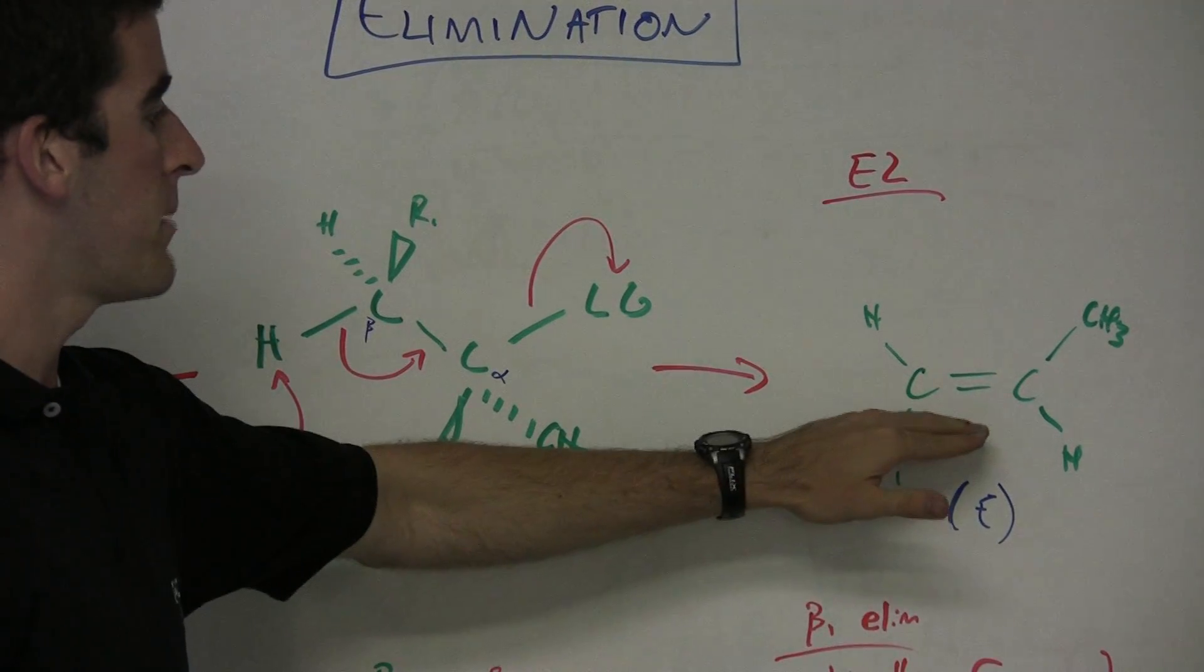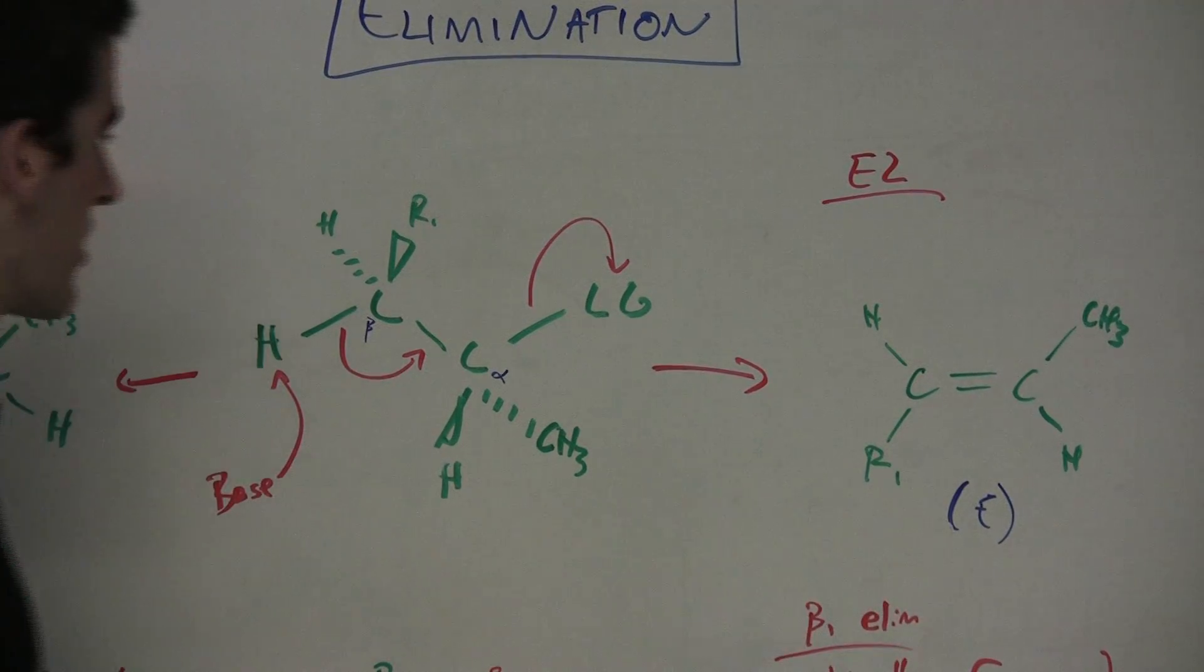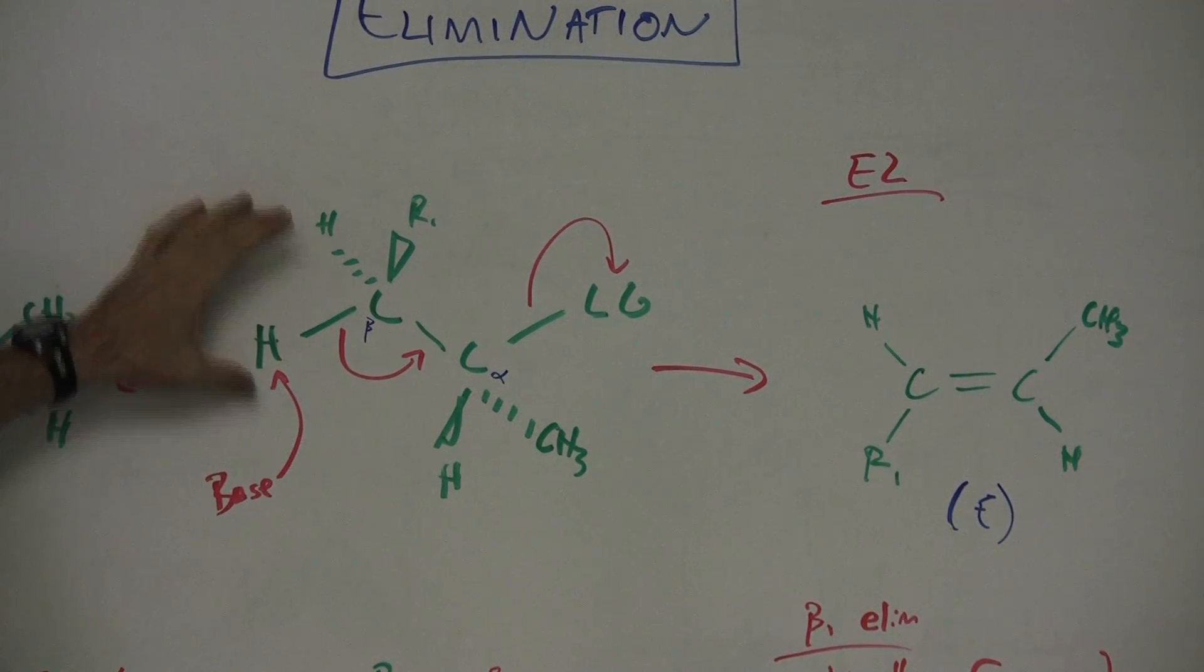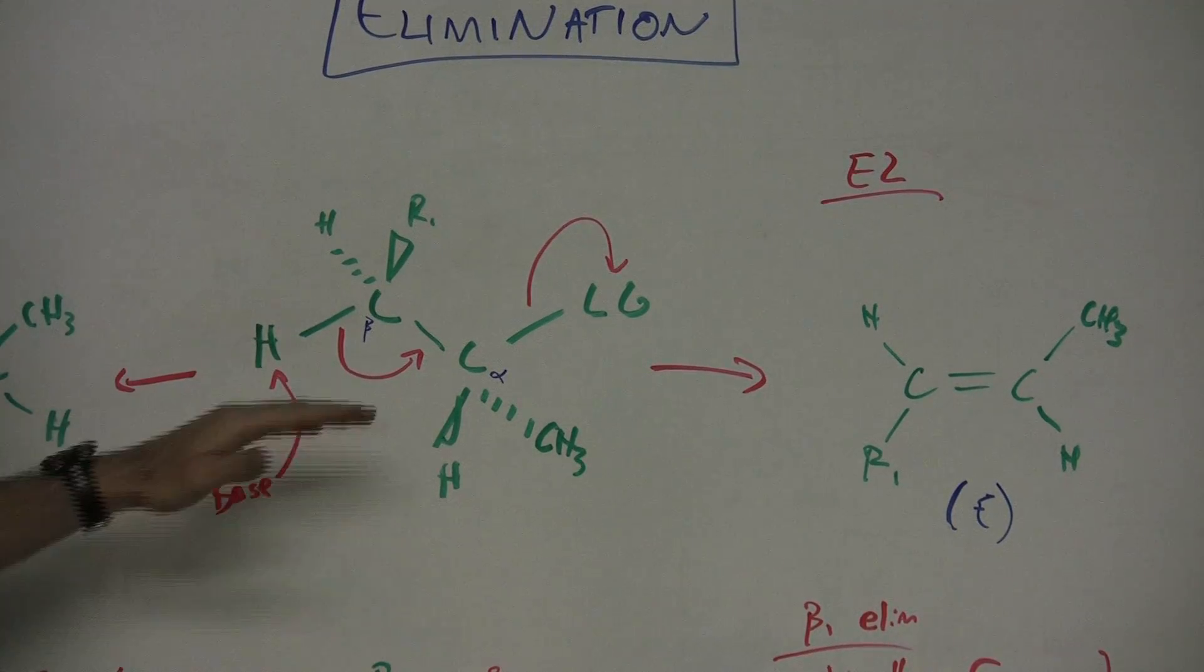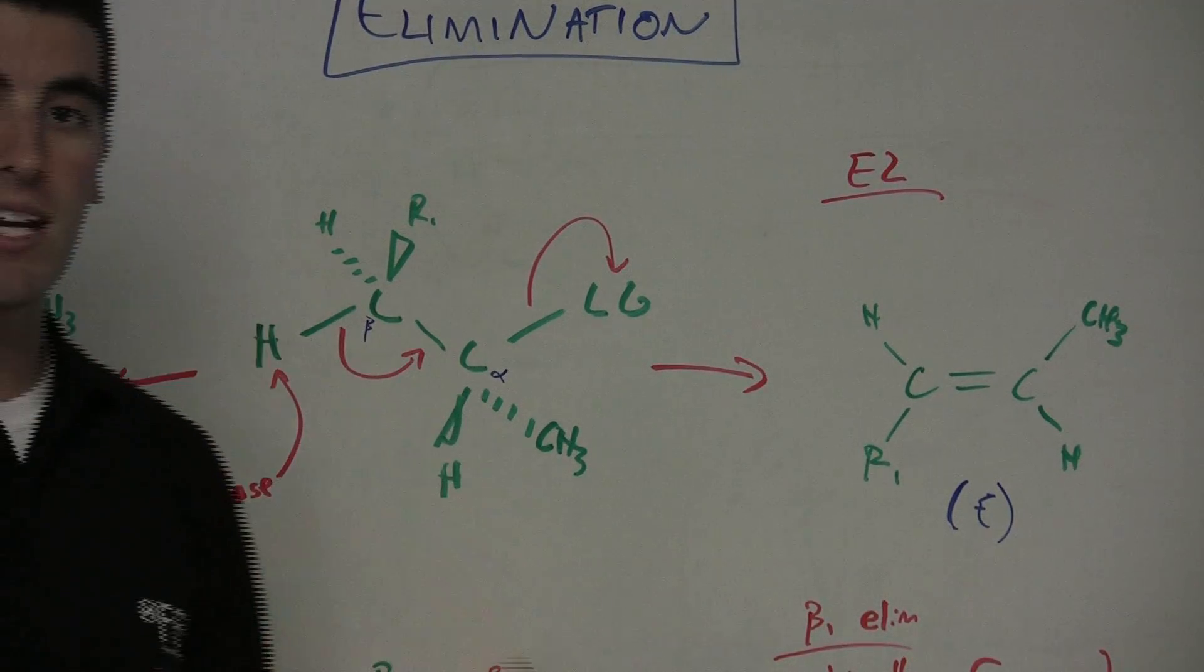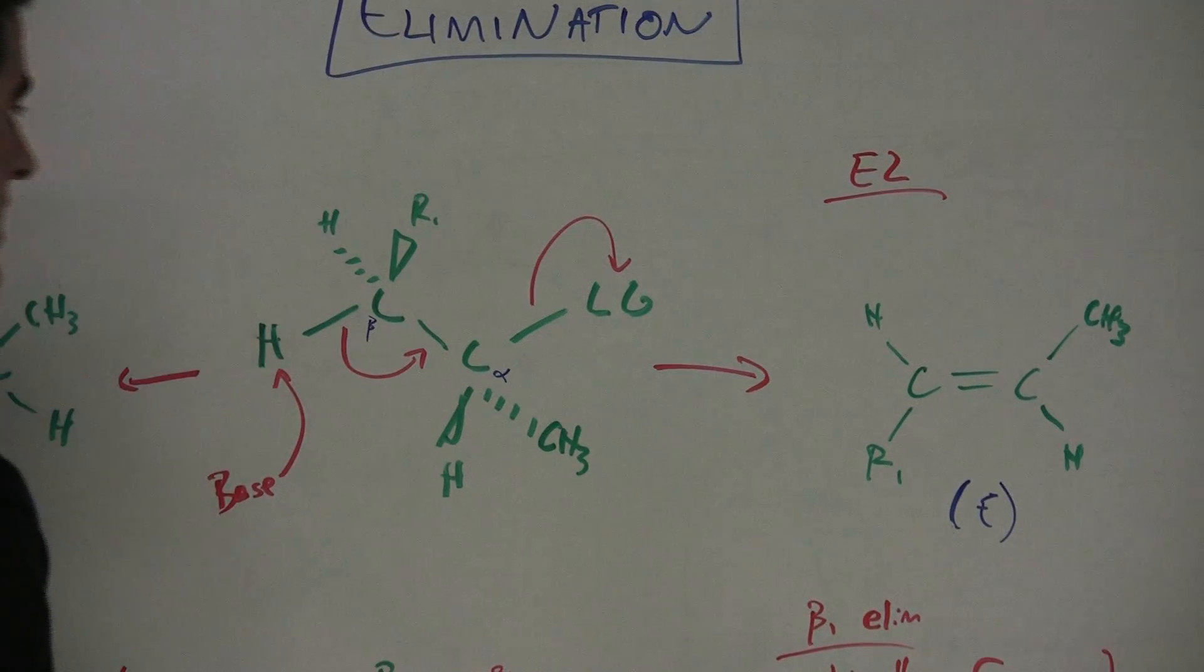And so the product being formed is a double-bonded product, the E diastereomer, but because there are two Hs here, we could have that Z diastereomer. Elimination of the other H after rotation would lead to that Z diastereomer.